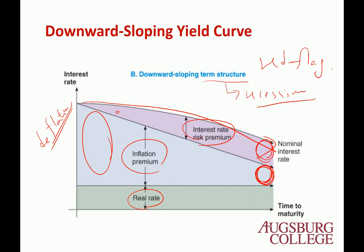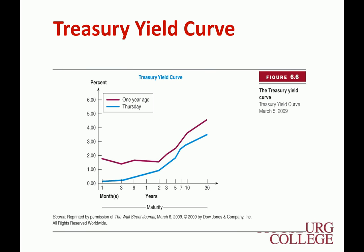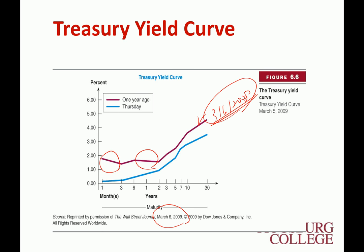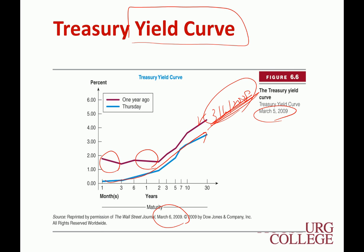Sometimes we have just part of the inverted yield curve. Looking at the yield curve as of March 6th, 2009, compared to one year ago — March 6th, 2008 — we see there is an inverted zone in the 2008 curve, which was the time that people actually worried about the economy. Then in 2009, after the crisis of 2008, we were basically recovering the economy and people were more optimistic, so we are back to the normal yield curve. The yield curve is a very good signal of investor perception about the future economy.